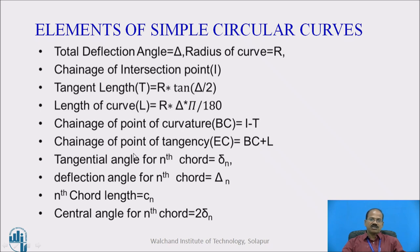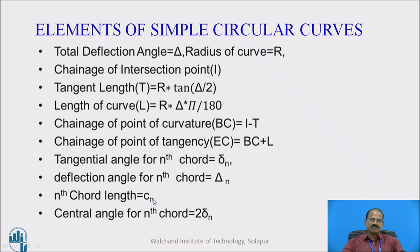There are a few angular terms: the tangential angle for the nth chord is assumed to be small delta n, the deflection angle for the nth chord is assumed to be capital delta n, and the nth chord length is assumed to be cn — so it may be c1, c2, c3 for the first, second, and third chord lengths. The central angle for the nth chord is 2 delta n.